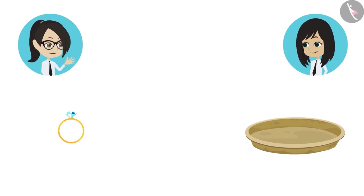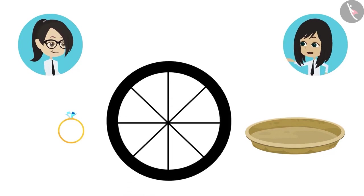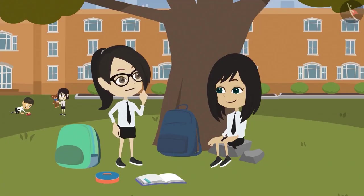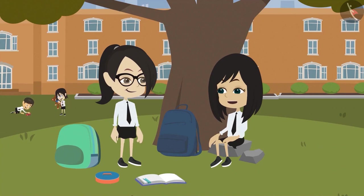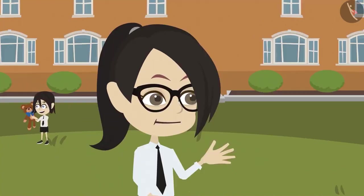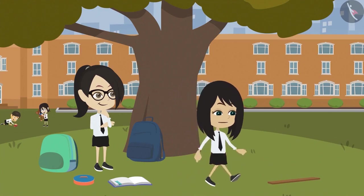If we have to make a bigger round shape, what can we use? We can make a bigger round shape using the tire of a cycle. What if we have to make an even bigger round shape? We will need a long wooden stick. How will you make it with a stick? Let me show you.